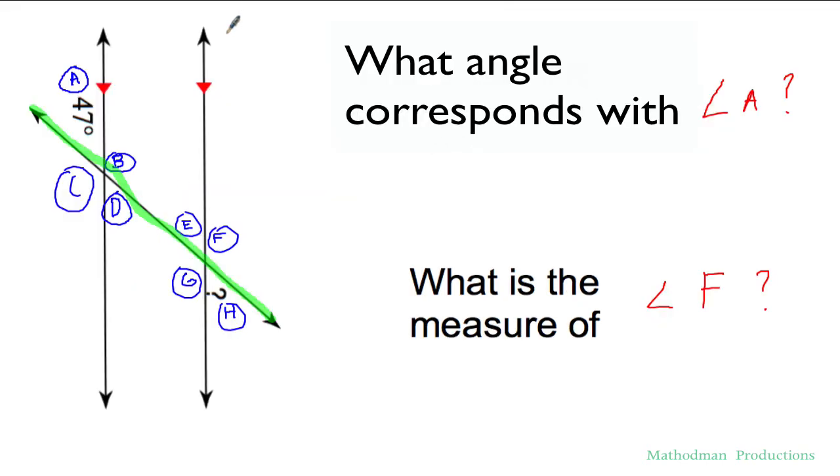Let's take a look at this second example right here. The picture kind of looks different but it's done the same way. Again I highly suggest that you highlight the transversal that cuts through the two lines. That way it's a little easier to see which angles correspond with each other.